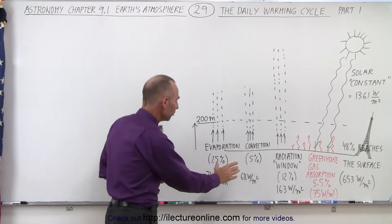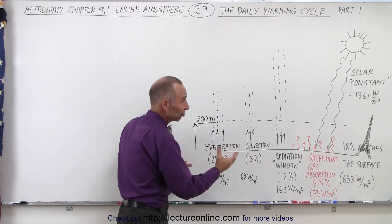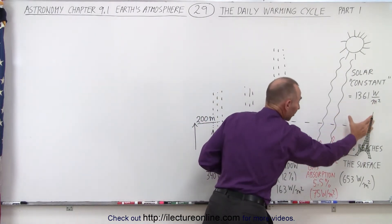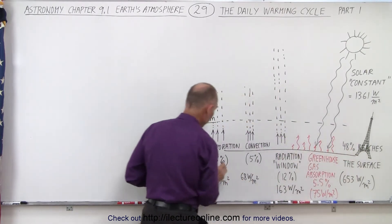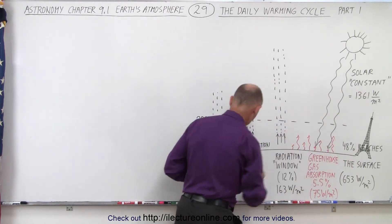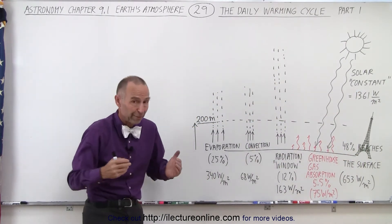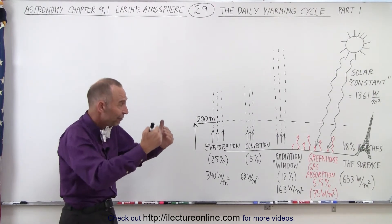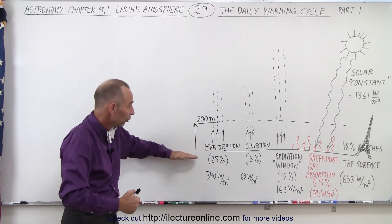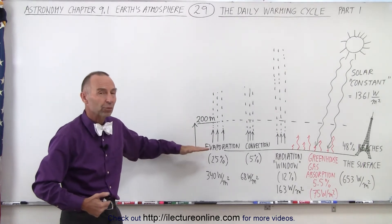Of the 100%, 48% is absorbed by the Earth. 25% of the 100%, or 340 watts per square meter, a little bit over half of what reaches the surface of the Earth, goes back in the atmosphere via evaporation.